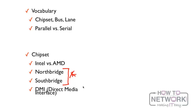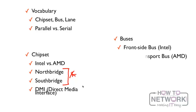We're also going to talk about the DMI — Direct Media Interface — which is what connects the North Bridge and the South Bridge together. Then we'll talk about buses: the front side bus, or the hyper transport bus, which are the same exact thing, and the memory bus.